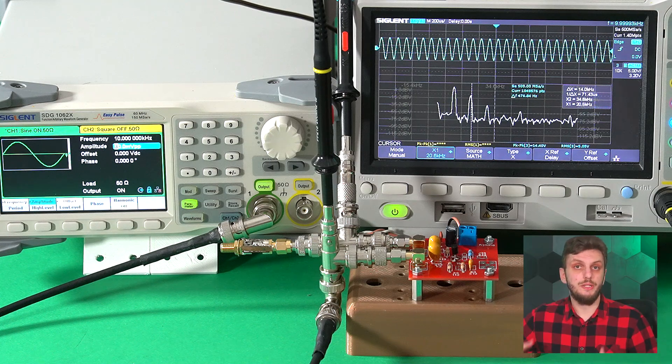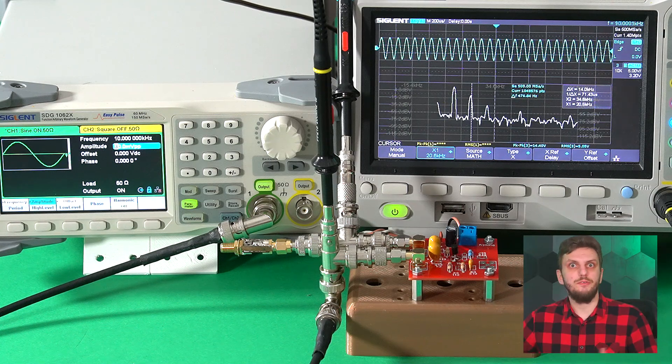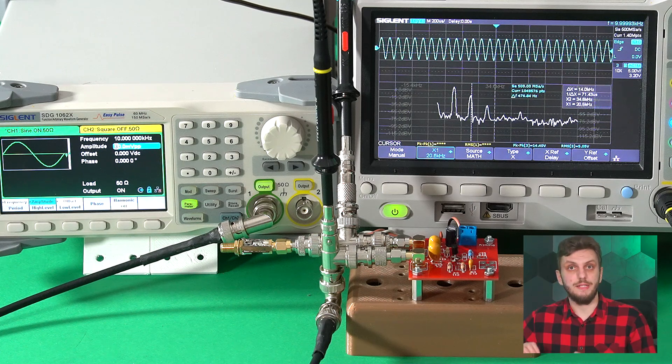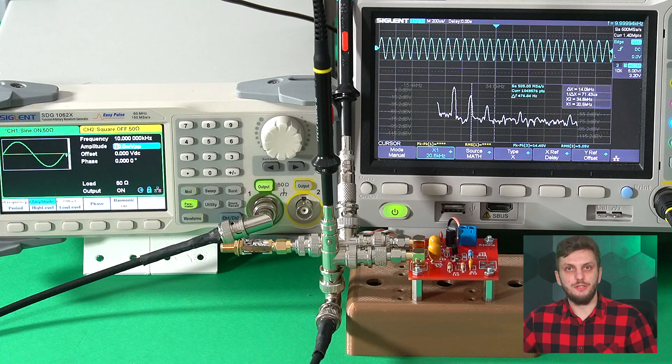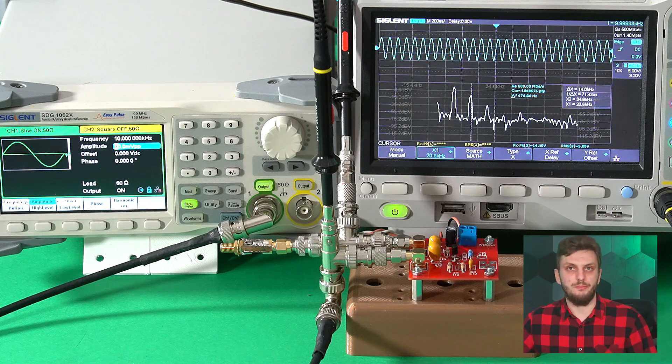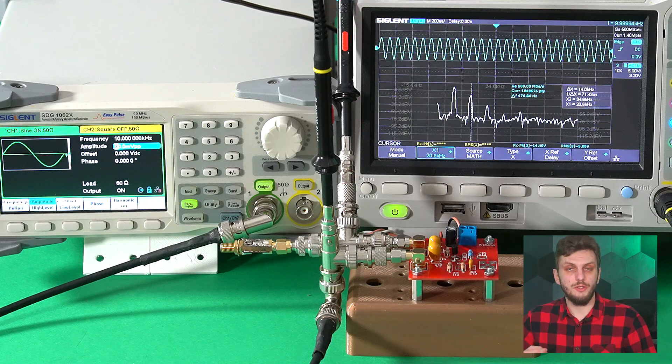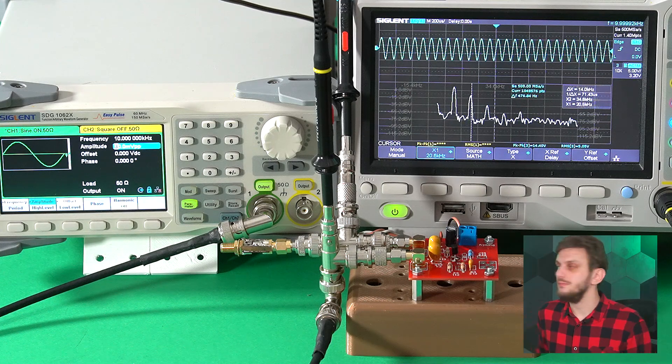Distortion started appearing when the input signal went above 5 to 10 millivolts. In order to keep it in its nice linear region, we need to inject very small signals into the amplifier. Anything higher will drive it into a non-linear region.